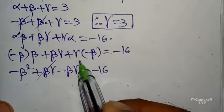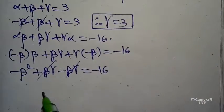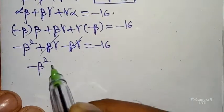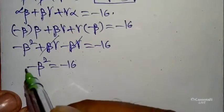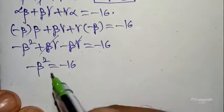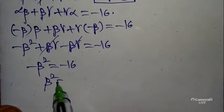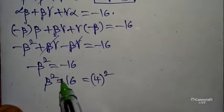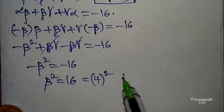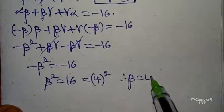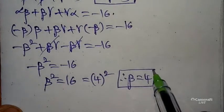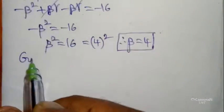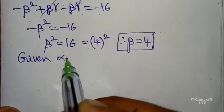After substitution and simplification, the beta·gamma and gamma·alpha terms cancel, leaving -beta² = -16. The negatives cancel, so beta² = 16 = 4². Therefore beta = 4.